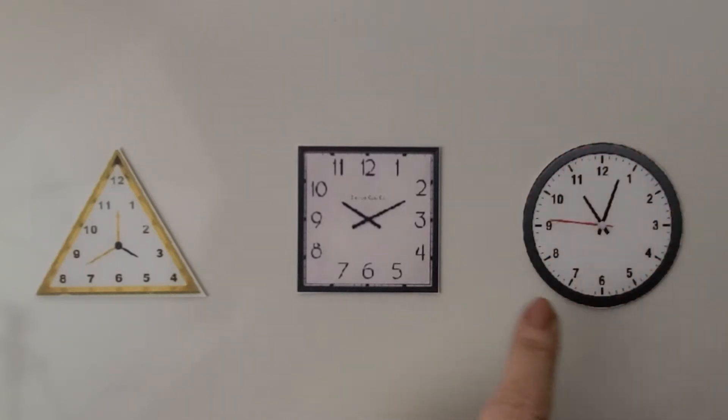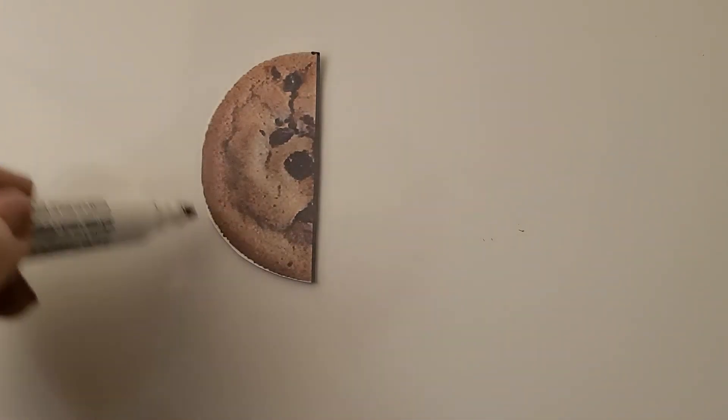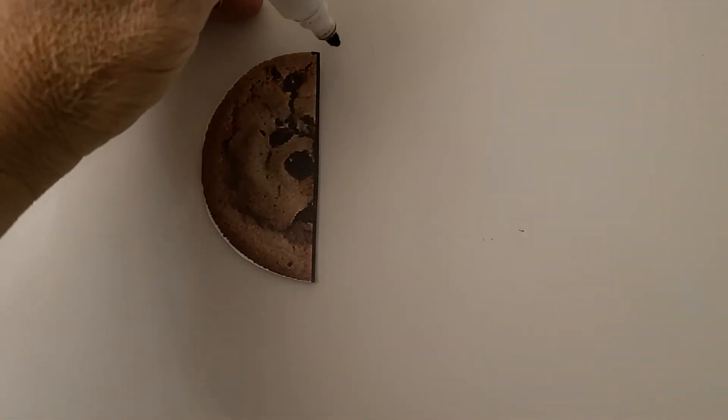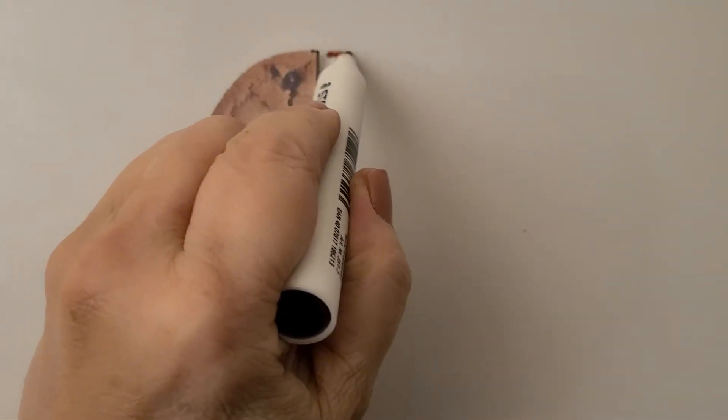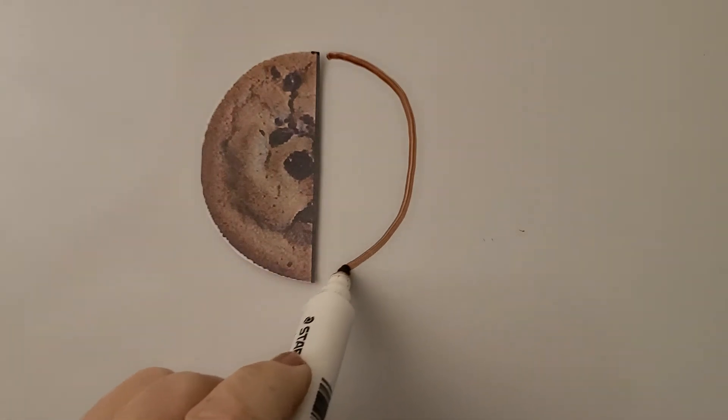Here we have part of a cookie. We need to finish drawing the cookie by completing the circle shape. We can see there's only part of the cookie. We can start right here and do our best to curve around and complete the cookie. We made it into a circle. We finished the circle. We made a curved line to finish the cookie.